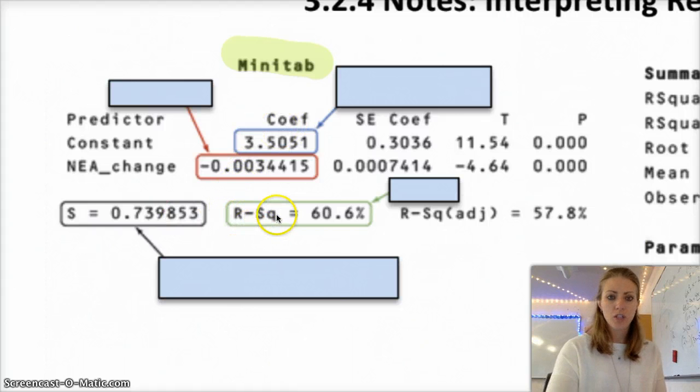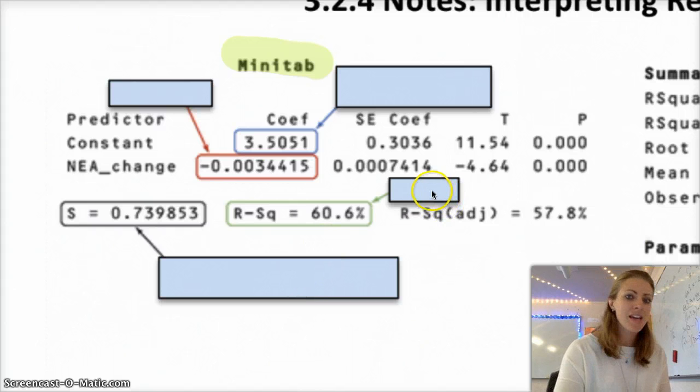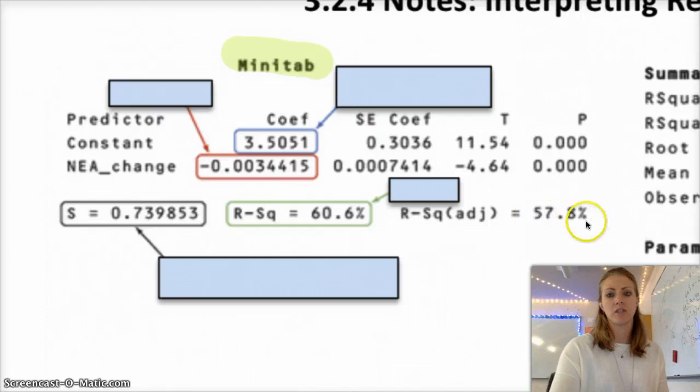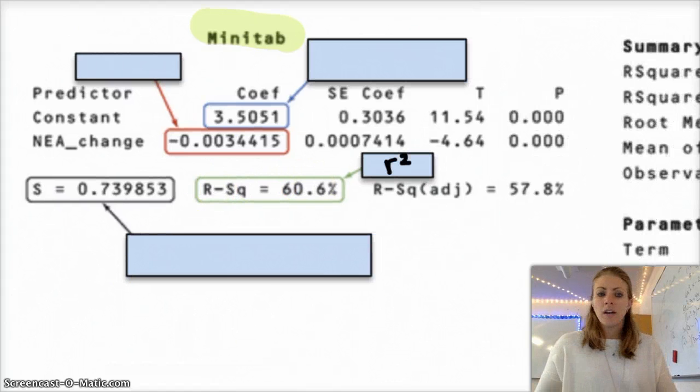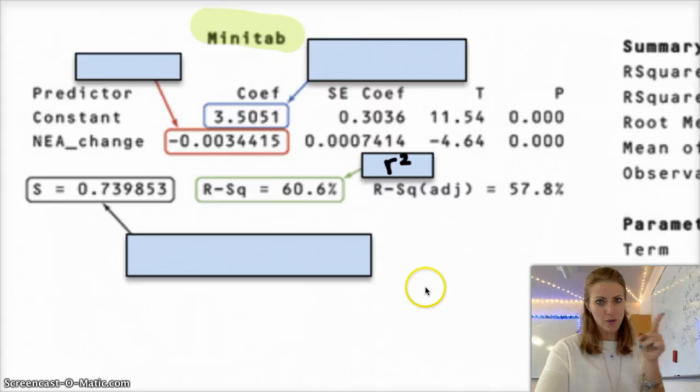So rsq hopefully is self-explanatory. You can figure out that rsq is r squared. There's an adjusted r squared, but that's kind of out of the scope of this course, so you don't need to worry about that one for now. So that's what rsq is. So remember, this is just a quick refresher, r squared is the coefficient of determination.